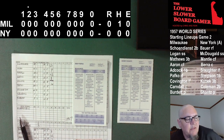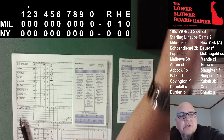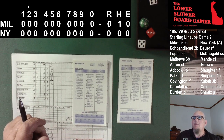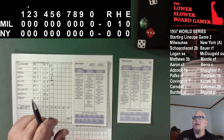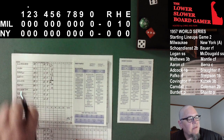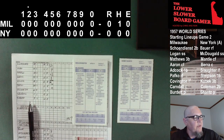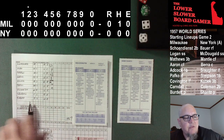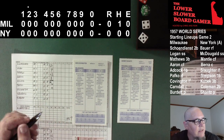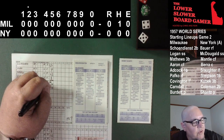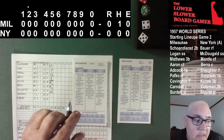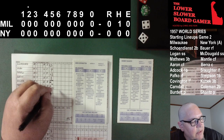Andy Pofko comes to the plate. Bobby Shantz gives a look over to Adcock — not a threat to steal, just keeping him honest. The pitch — 3-11. Hard ground ball to second base. Coleman gets it to McDougald for the force on Adcock — not enough time to get to first. Pofko reaches on a fielder's choice. One on, one out. Wes Covington comes to the plate. Shantz pitches — 5-9. Hard grounder to shortstop. McDougald flips to Coleman, on to Simpson for the 6-4-3 double play. End of the top of the second inning, no runs scored.